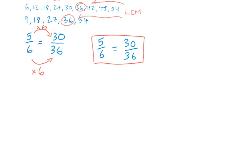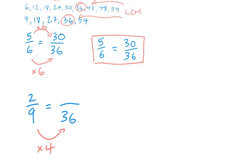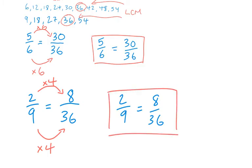Now we're going to do the exact same thing for our other fraction, 2 over 9. The new denominator is 36 — that's what we figured out beforehand. Ask yourself how do I get 36 from 9? Using your times table, 9 times 4 is equal to 36. What you do to the bottom of the fraction you also have to do to the top, so multiply the numerator by 4 as well: 2 times 4 is 8. So 2 over 9 is equal to 8 over 36 — these are equivalent fractions, even though they do not look alike at all.